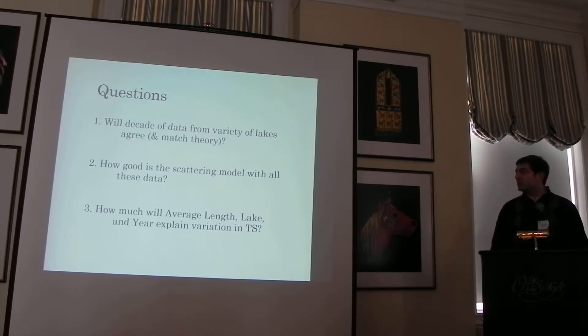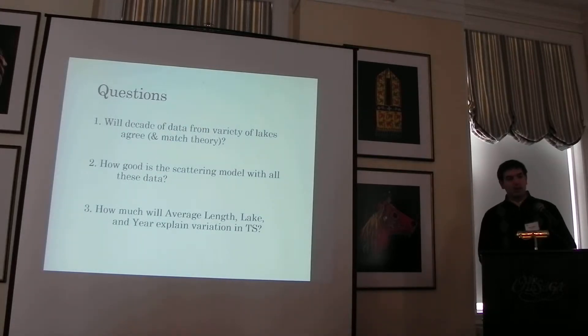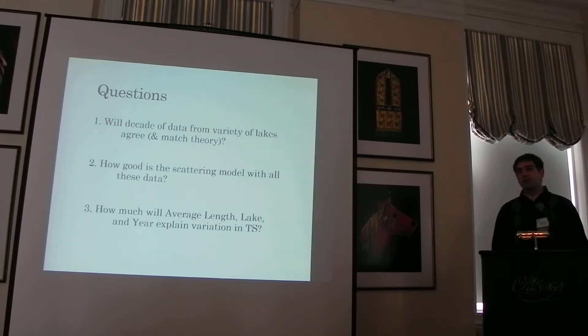We want to see that they match the theory and just that they work together. We also want to see if the scattering model is still pretty accurate and how much average length, lake, and year will explain the variation that we see in the target strength. The reason for that is that if you have a lot of year-to-year variability in target strength, you might be more inclined to get a lot of samples each year to ground truth your data. If you have not so much variability, you might be less inclined, which would save time and cost.